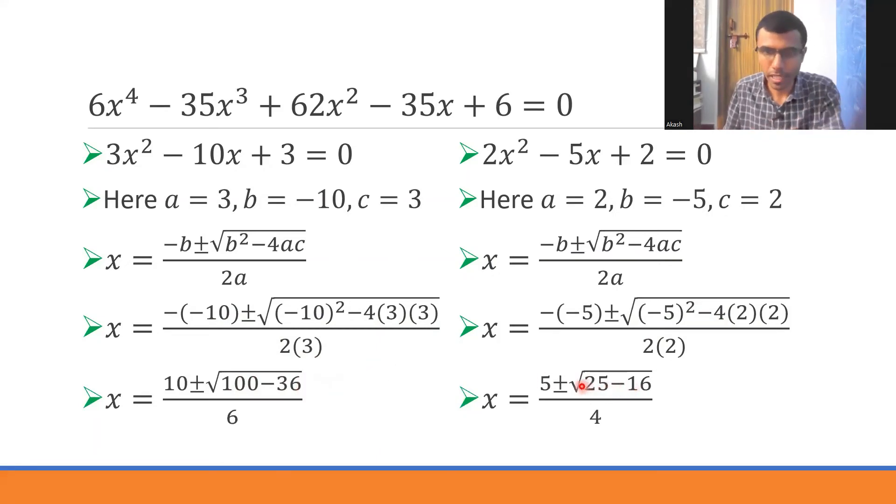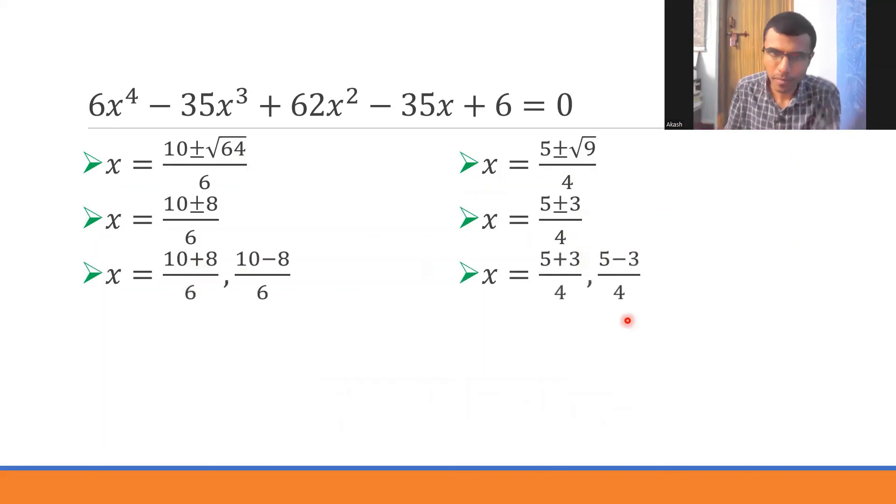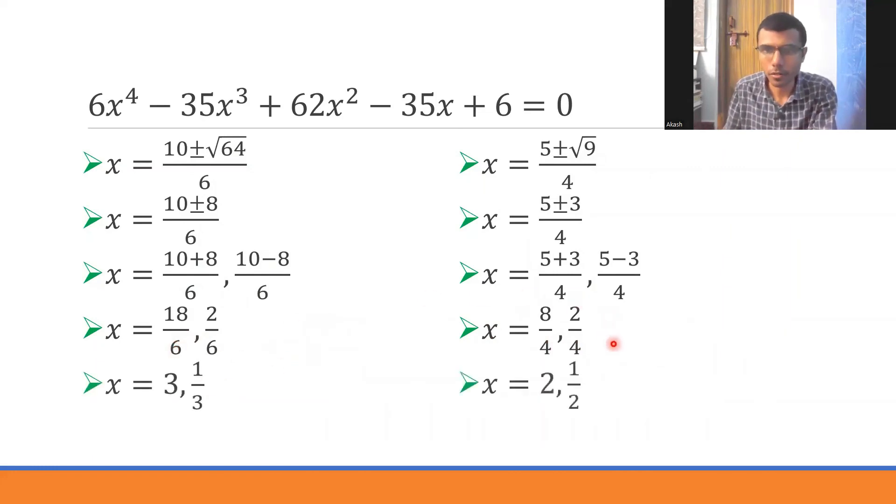100 - 36 = 64, 25 - 16 = 9. √64 = 8, √9 = 3. So (10 ± 8)/6 and (5 ± 3)/4. 10 + 8 = 18, 18/6 = 3. 10 - 8 = 2, 2/6 = 1/3. Here, 8/4 = 2 and 2/4 = 1/2. So we get 3, 1/3, 2, and 1/2.